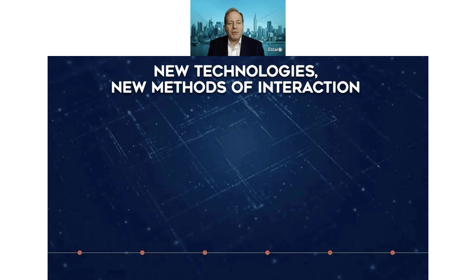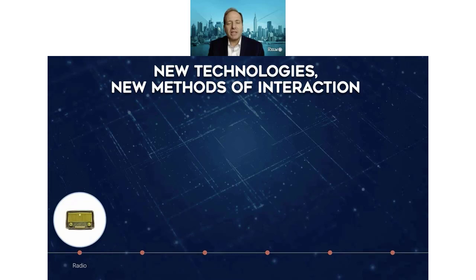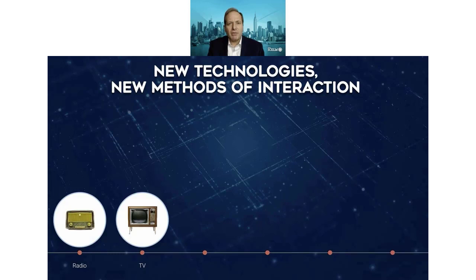Historically, as we see technology change, we see new methods of interaction. One point we had radio, which gave us sound — we could have sound portably anywhere. Television gave us video right in your home; no longer did you have to go to the movie theater. But again, you had to think about what you could do differently with video. Some of the early TV programs were more like radio programs where they would just be talking. It took some time for things to get reimagined and to evolve fully.